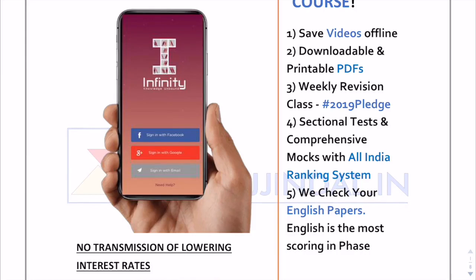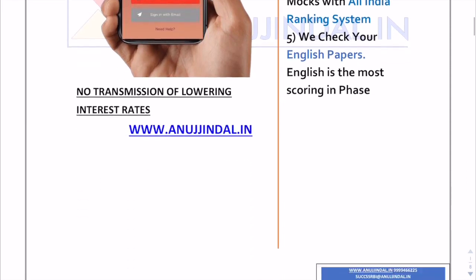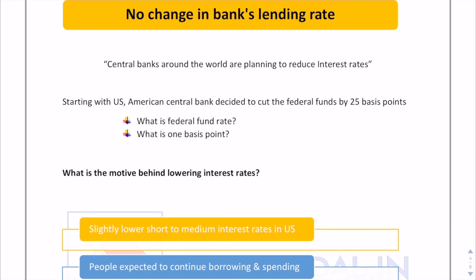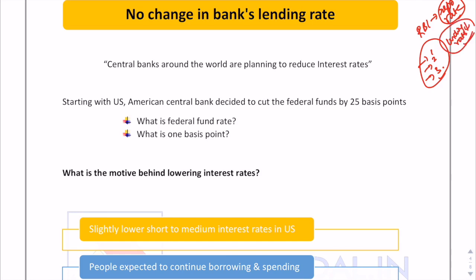Hi guys, so I'm here with another important topic of finance current affairs. Today we will be studying why there is no transmission of the lowering interest rates into our lending rates. In this document, firstly we shall be studying that RBI reduced its repo rate, and next we are going to understand three reasons why, despite the fact that the repo rate has been reduced, the lending rates have not been reduced.